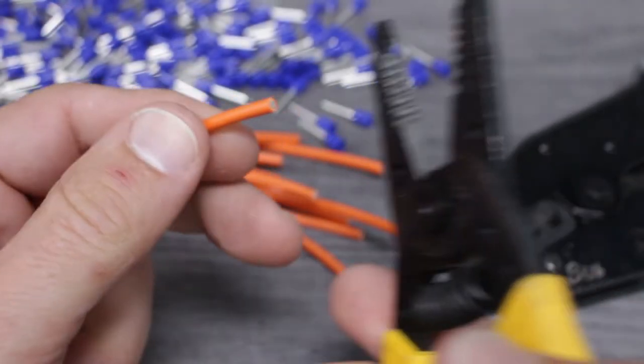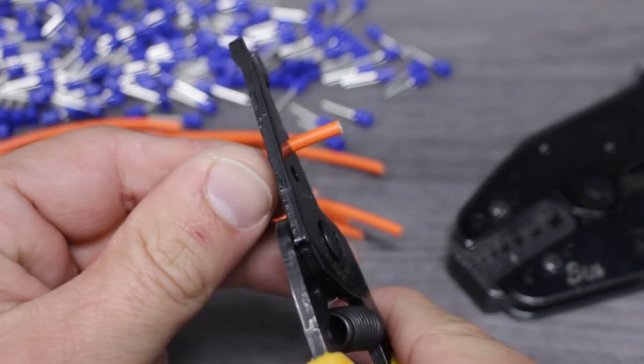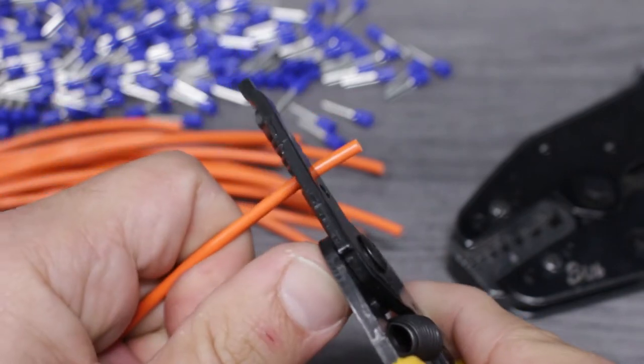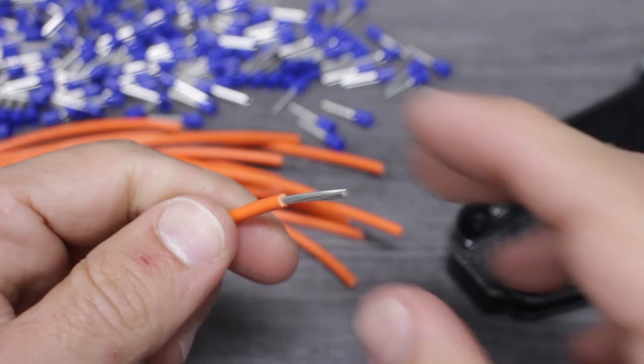Once we know the correct amount of insulation to remove, we'll use the cut nests from our compact wire stripper and close the tool around the wire. Now, we'll pull the tool away from the wire, removing the insulation.